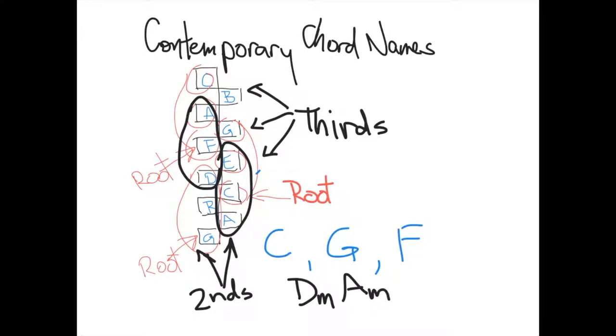So we then need to clarify. You can't just call it a D. D would imply a D major. We have a minor chord, so we call it D, M-I-N, lowercase, or simply a lowercase m. Same experience with an A or an E in the key of C. So now we have A minor, E minor.